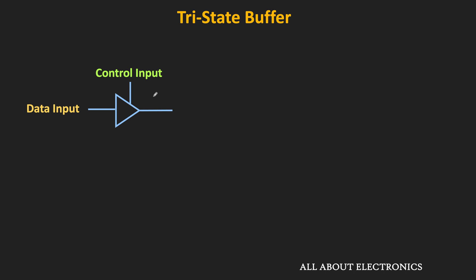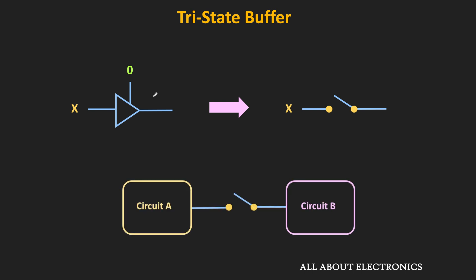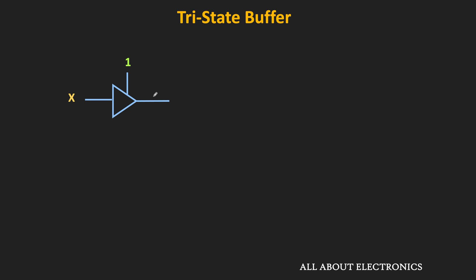Basically, this control input acts as a valve. Whenever this control input is equal to 0, the buffer will act as an open circuit and it disconnects the output from the input side. That means whenever two circuits are connected to the input and output of the buffer and this control input is equal to 0, the buffer will provide very high input impedance. Due to that, the circuit on the output side does not draw any current from the other side, so effectively these two circuits will get isolated from each other. Whenever this control input is equal to 1, this tri-state buffer will act as a normal buffer — whatever input is present on the input side, the same will appear on the output side.